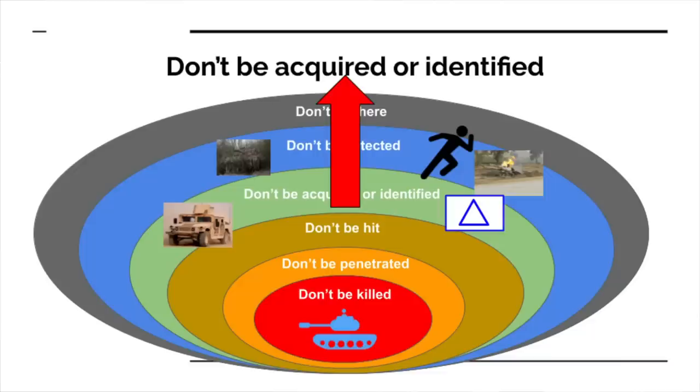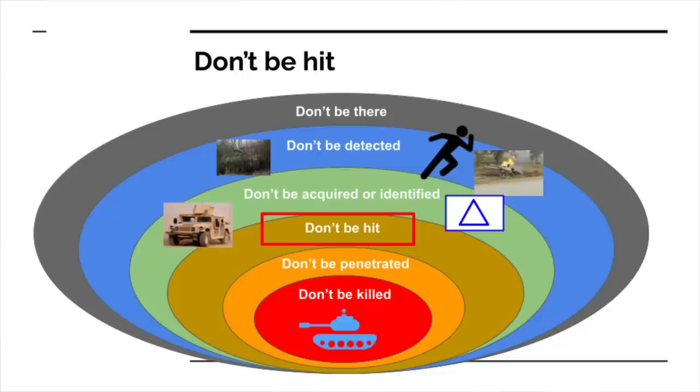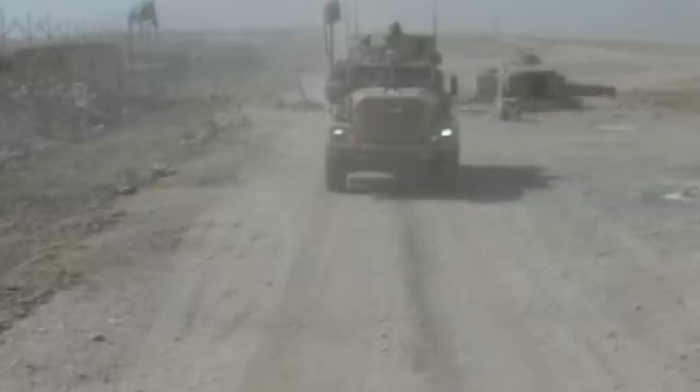If you're following the first three layers of the onion, you stand a pretty good chance of staying alive. Don't be hit. Once you move through this layer, you are now in active combat and have to worry about the kinetic effects of the enemy. To start: maneuver. Don't stay still — if you stay still, you die.